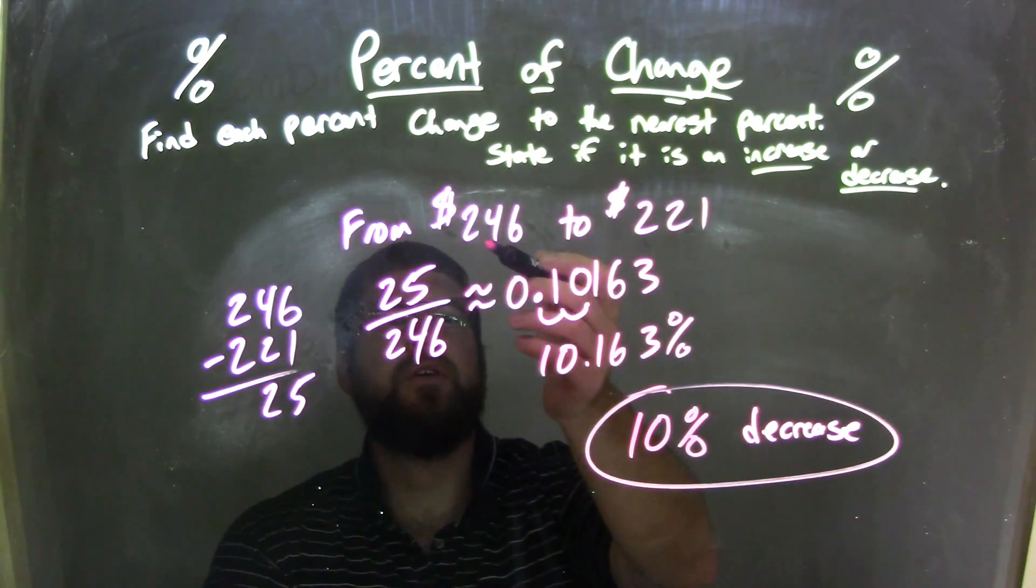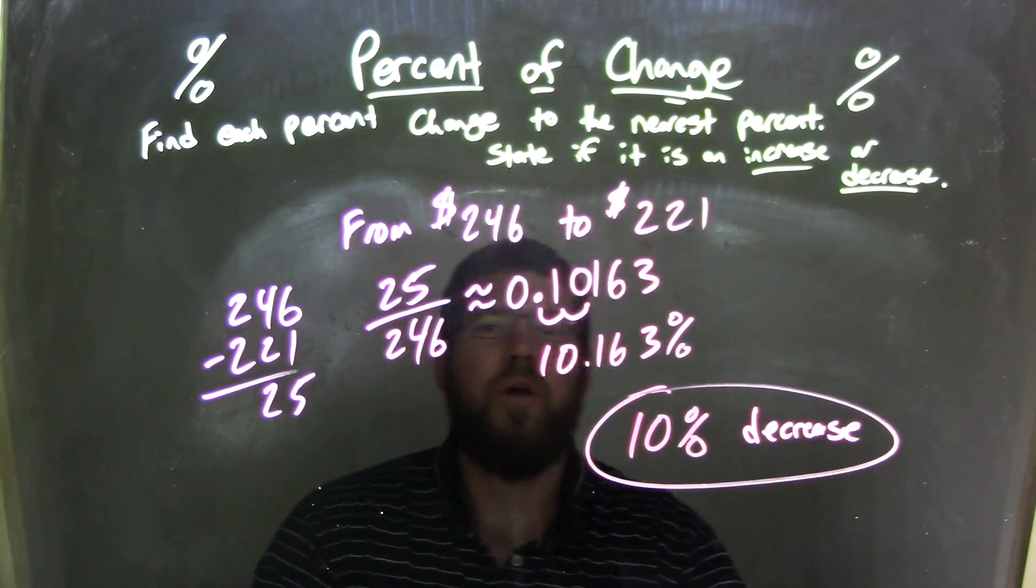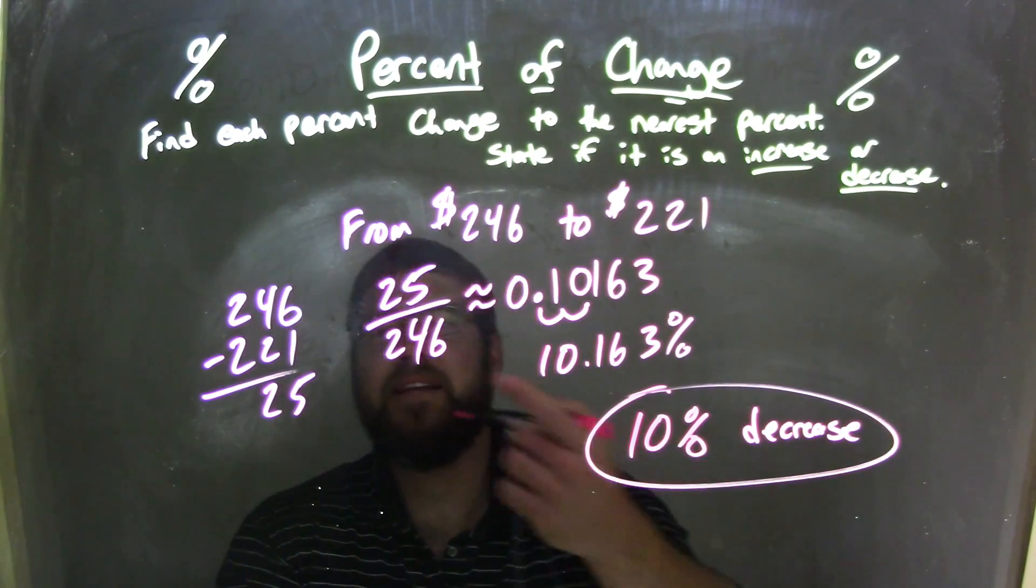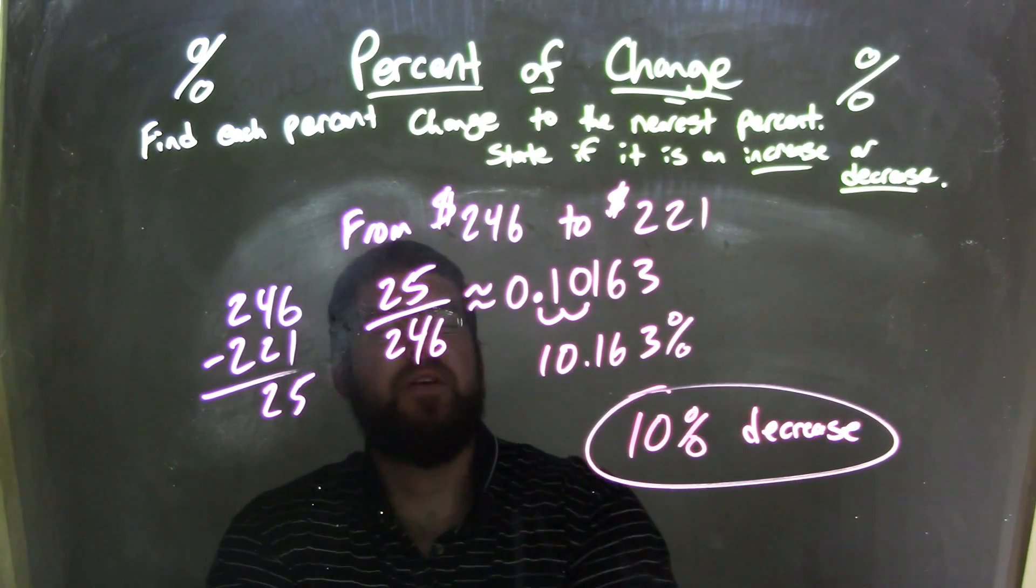Let's recap. We started from $246 to $221. We know that was going down, so that's a decrease. From that, we found the difference between them: 246 minus 221 to get 25.